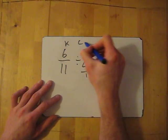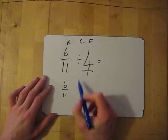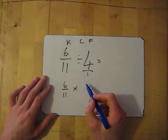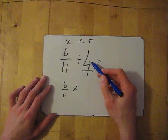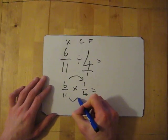Then KCF. Keep, change, flip. So we've got 6 over 11. Keep, change to multiply, then flip. So the 1 goes to the top, the 4 goes to the bottom. So it's 1 over 4. And then multiply the top two numbers, multiply the bottom.